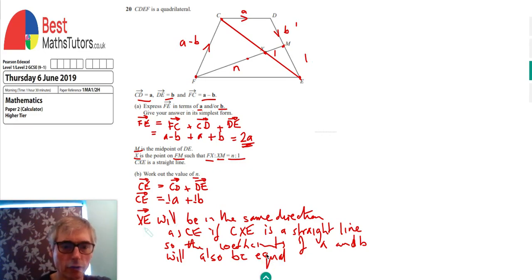I'm now going to find an expression for XE. XE is any path from X to E. So XE is XM plus ME. We do know what ME is because ME is half of DE. So ME equals half of DE, and since DE was B, then ME is half of B.